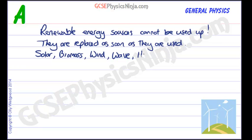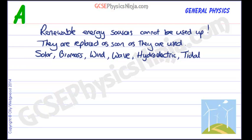We've got hydroelectric power, where you may have a big dam and all of that water behind the dam is then let through turbines, falling through the turbines to produce electricity. We've also got tidal energy — the moon orbits the earth and pulls the earth's oceans and waters.